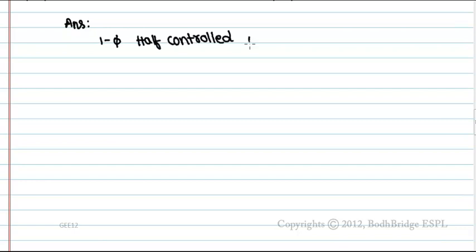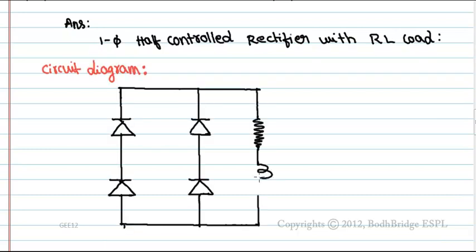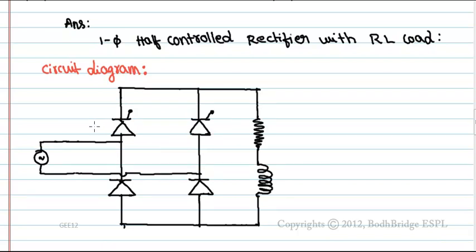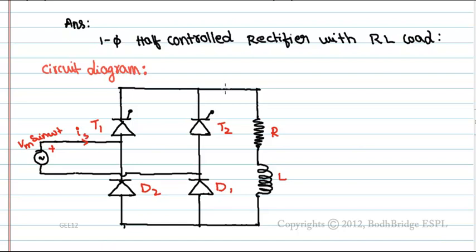Answer: single-phase half-control rectifier with RL load. The circuit diagram shows the circuit for a single-phase half-control rectifier with RL load and source voltage Vm sin(ωt). The components are: thyristor 1, diode 1, thyristor 2, diode 2. Source current is IS, load current is I0, and load voltage is V0.